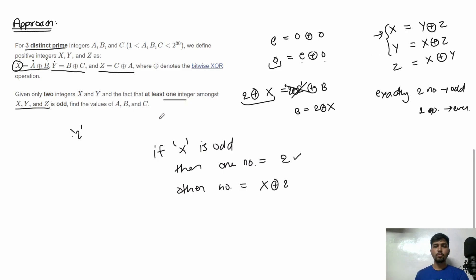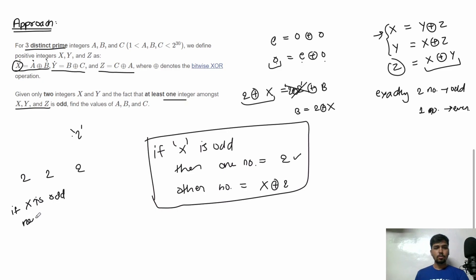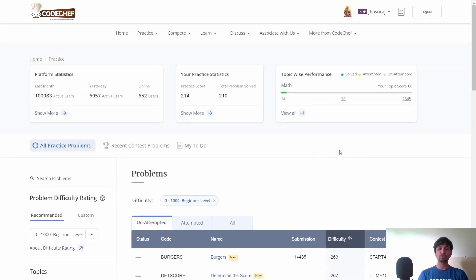So our solution is: first assume all three values a, b and c are 2 — initialize an answer array as [2, 2, 2]. Then calculate z as x XOR y. If x is odd, replace one element with x XOR 2. If y is odd, replace another element with y XOR 2. If z is odd, replace the third element with z XOR 2. Since exactly two numbers will be odd, two of the twos get replaced, giving us two, and two new distinct numbers. Sort and print.